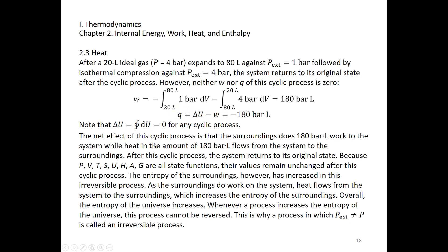The net effect of this cyclic process is that the surroundings do some work on the system, and the system loses energy in the form of heat. Heat and work cancel so that ΔU = 0. After the cyclic process, the system returns to its original state, and all state functions — pressure, volume, temperature, entropy, internal energy, enthalpy, Helmholtz energy, Gibbs energy — return to their original values. However, the entropy of the surroundings increases in this two-step process. Therefore, this process is called an irreversible process.